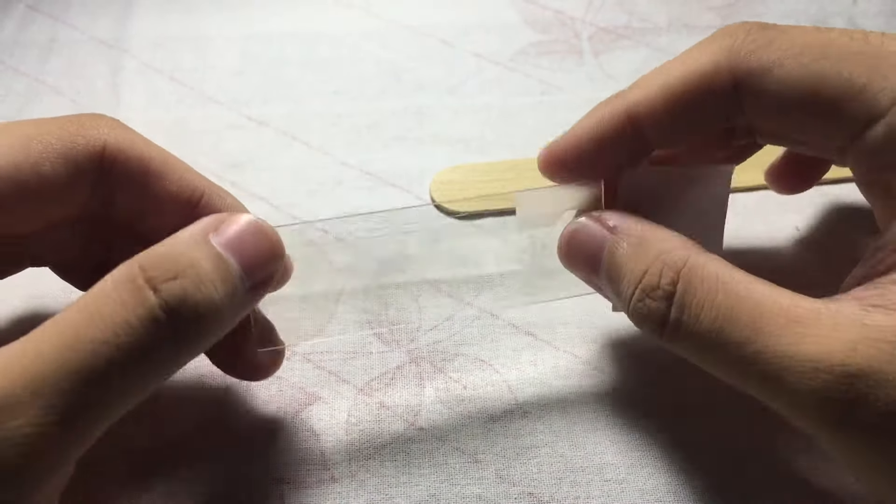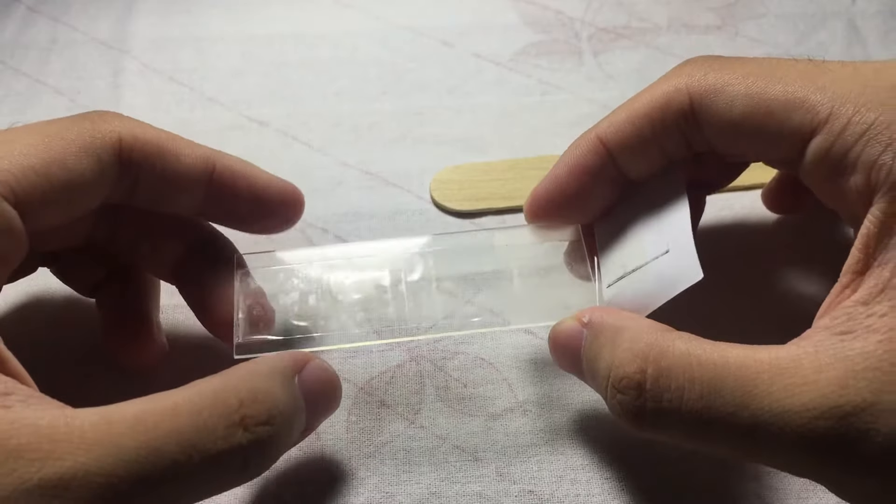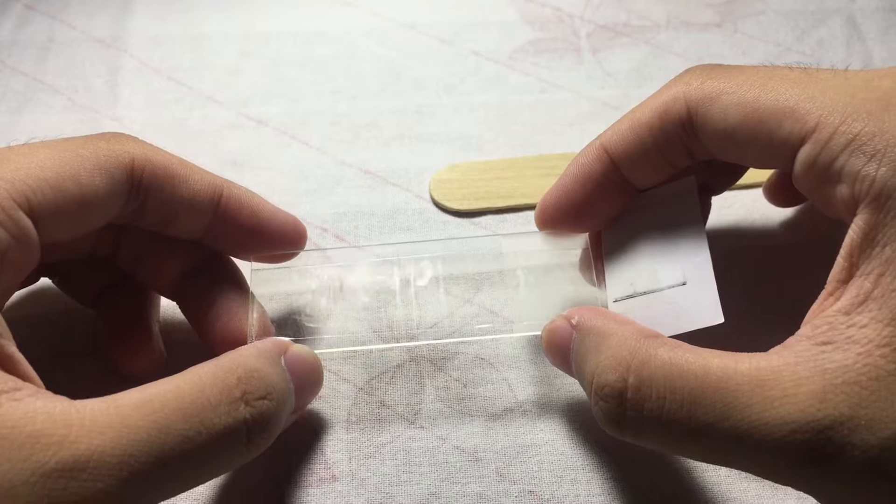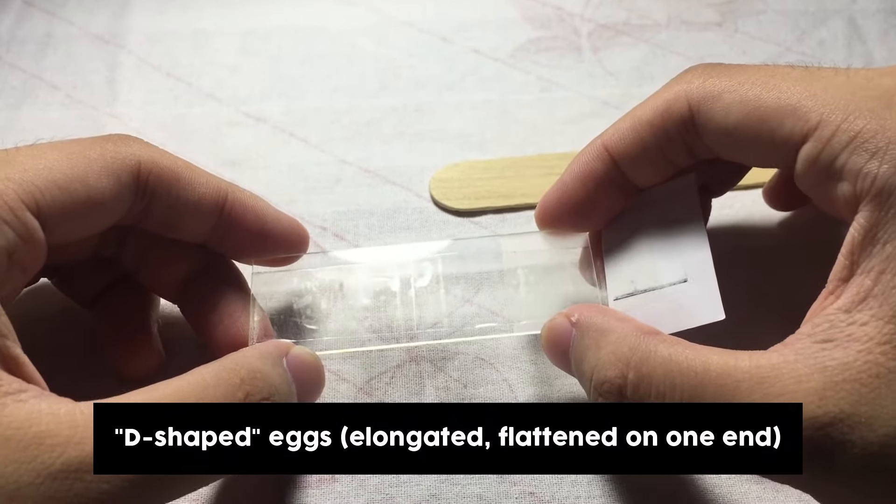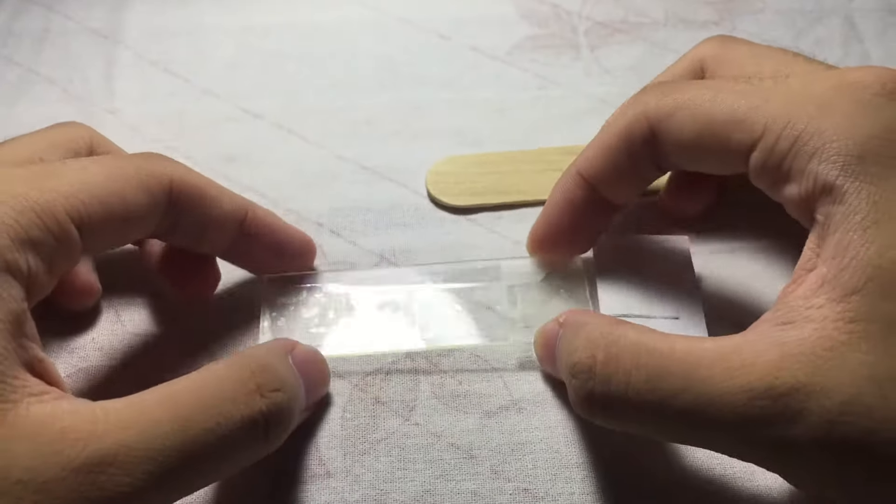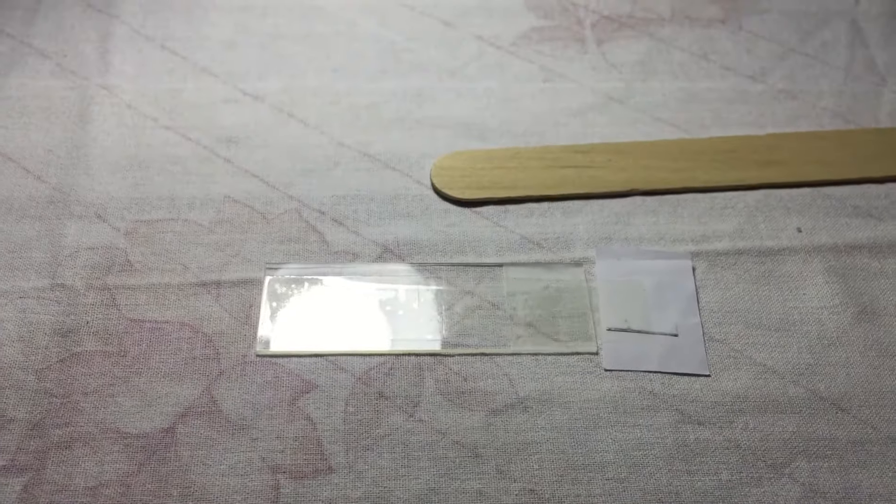We can examine it under the microscope using LPO and we can use toluene or xylol to clear the preparation. Examine and look for the characteristic eggs of Enterobius vermicularis: D-shaped, flattened on one end, and elongated. That's all for your scotch tape swab.